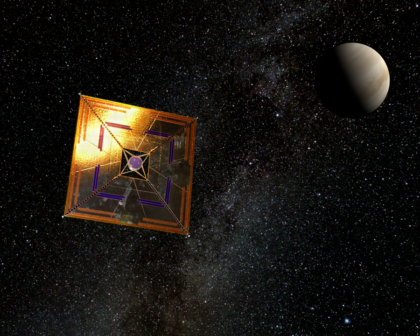Solar sails are a proposed method of spacecraft propulsion using radiation pressure exerted by sunlight on large mirrors. A useful analogy may be a sailing boat, with light exerting force on the mirrors akin to a sail being blown by the wind.